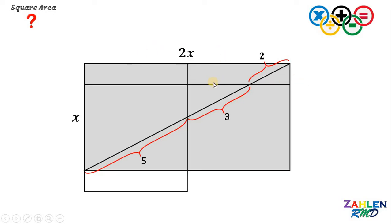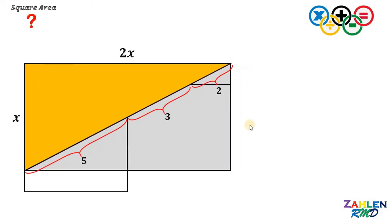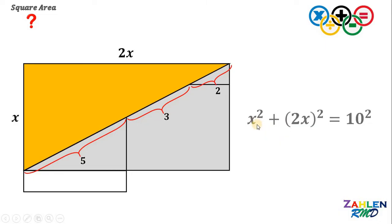We will use Pythagorean Theorem to solve for the value of x. And we know that the area of the square is just x squared. So we want to find the value of x squared. Using Pythagorean Theorem, we have x squared plus 2x quantity squared equals 10 squared, or simply 2 plus 3 plus 5.